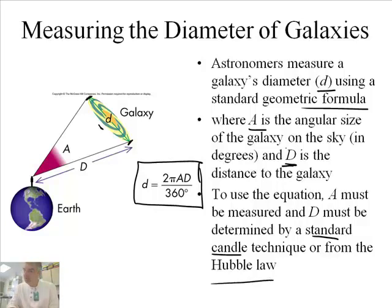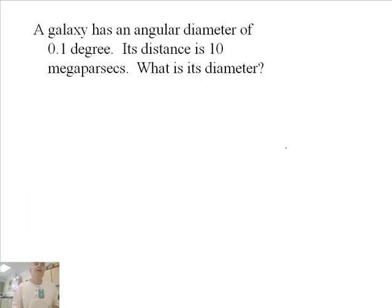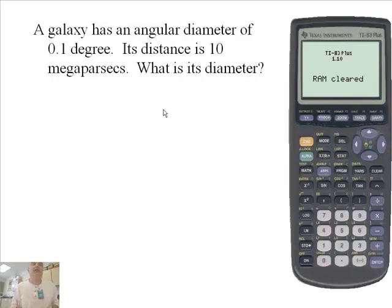So let's do an example, and I bet you should probably get your calculator out. OK, so we have a galaxy with angular diameter of 0.1 degrees. All right, so let's write down our equation.